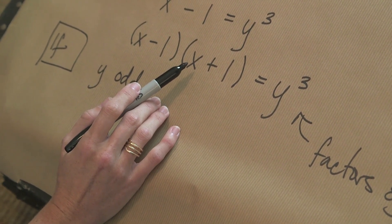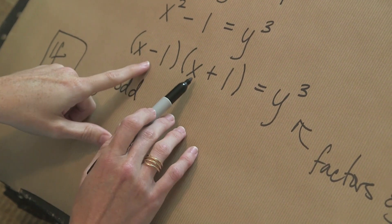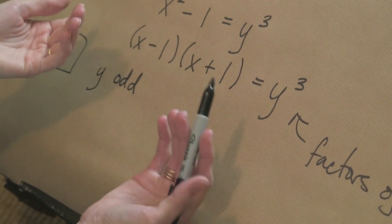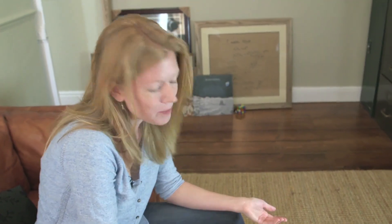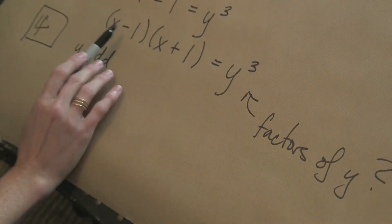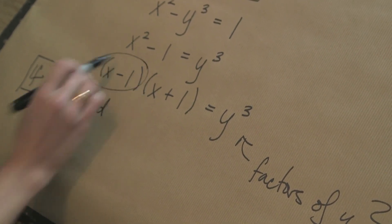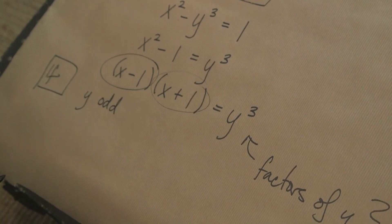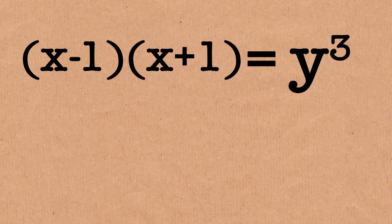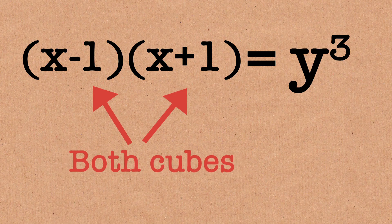So if y is odd, that means then that any factor of y has to divide one of these two things, but it can't divide both of them at once. And the reason why is that whatever these two numbers are, they differ only by 2. So for the same reason, they can't have a common factor other than possibly 2. So if y is odd, all the factors of y either divide x minus 1, or a factor of y divides x plus 1, but not both at the same time.